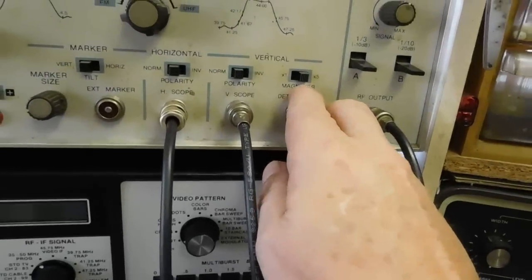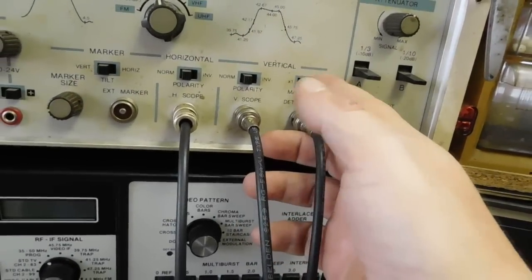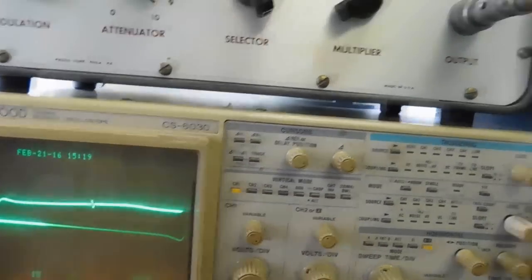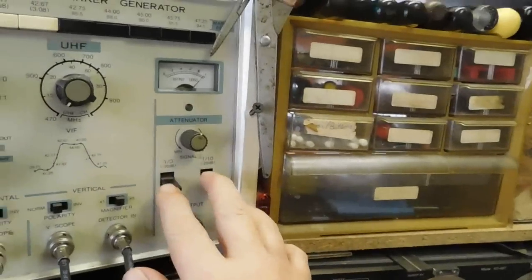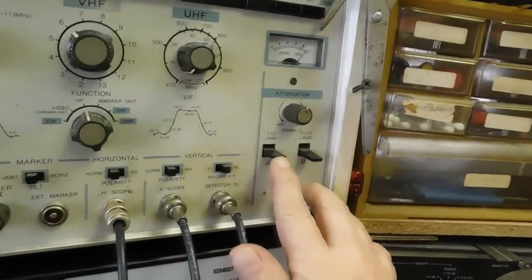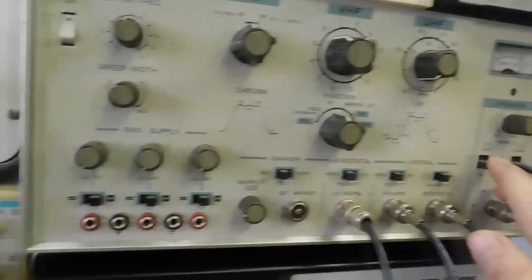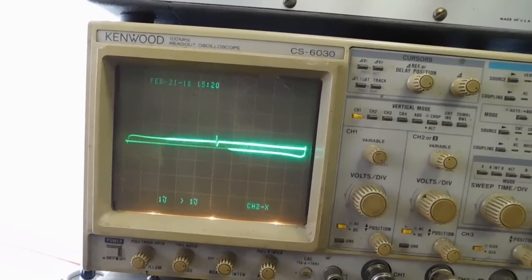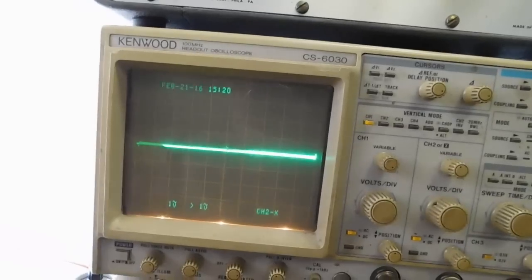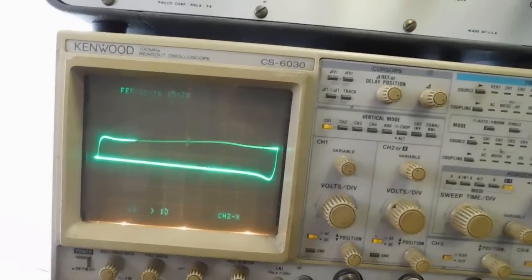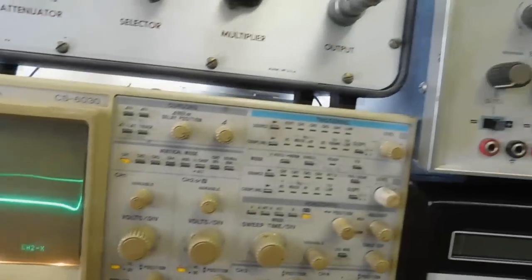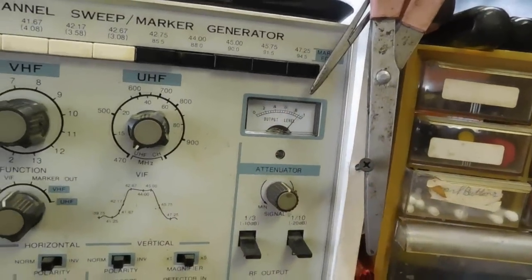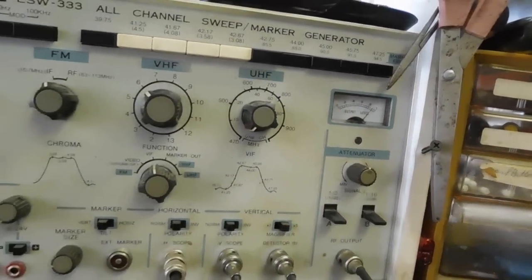The other thing, there's a magnifier for the detector input. So if I come over here, you can see it gets smaller and bigger. And then we have our various attenuators. So I'll show you what they do. That's 10 dB down and 20 dB down. And then there's a variable. And it does have a signal level. This output level actually works a lot better when you're hooked up to an actual set.